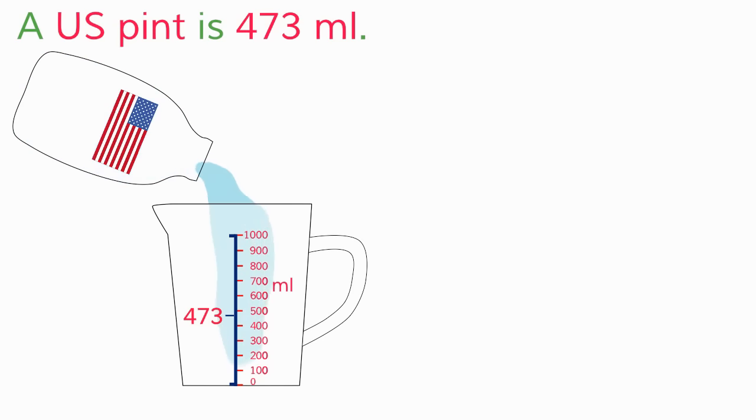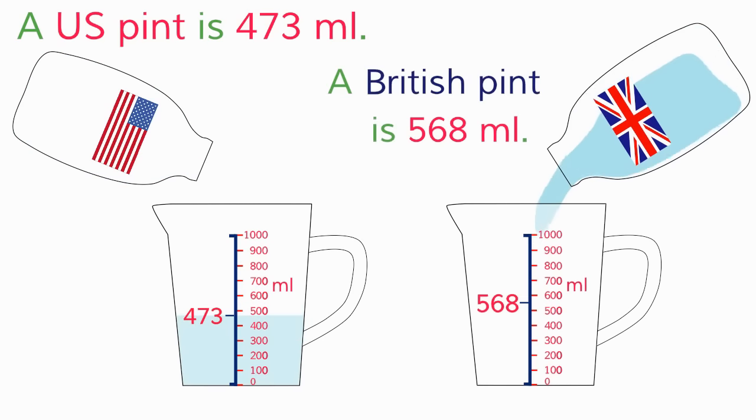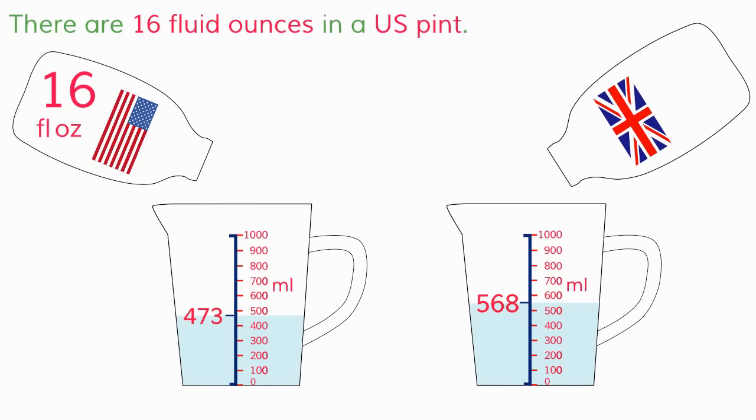A U.S. pint is 4.73 and a British pint is 5.68. There are sixteen fluid ounces in a U.S. pint. Twenty fluid ounces in a British pint.